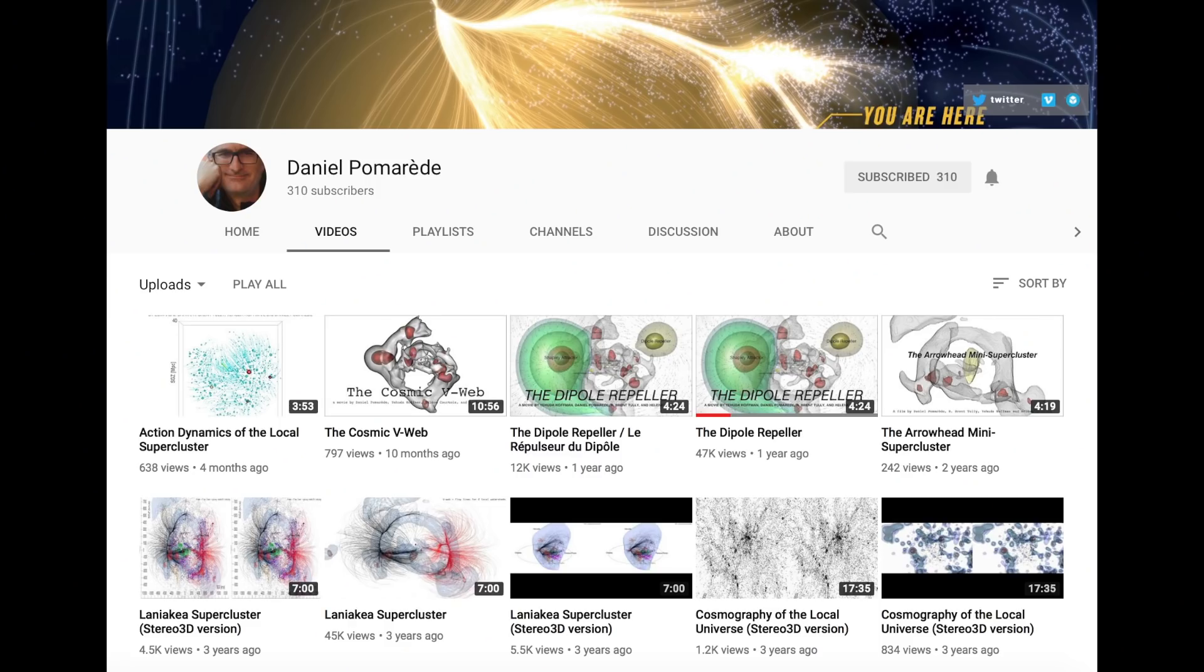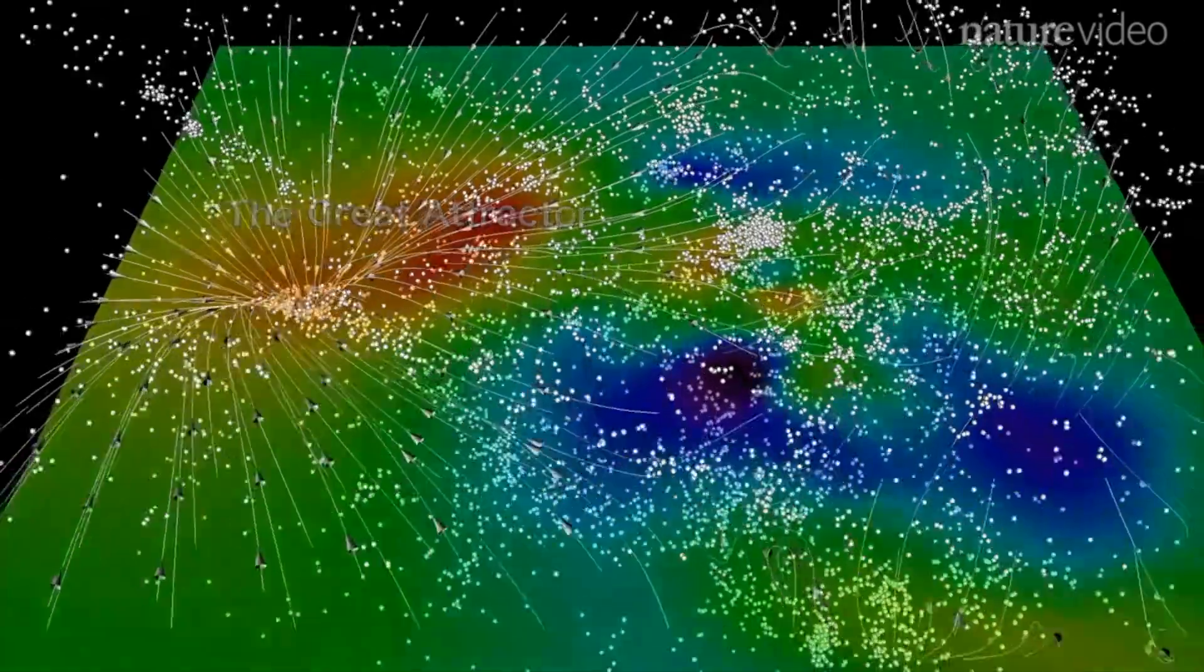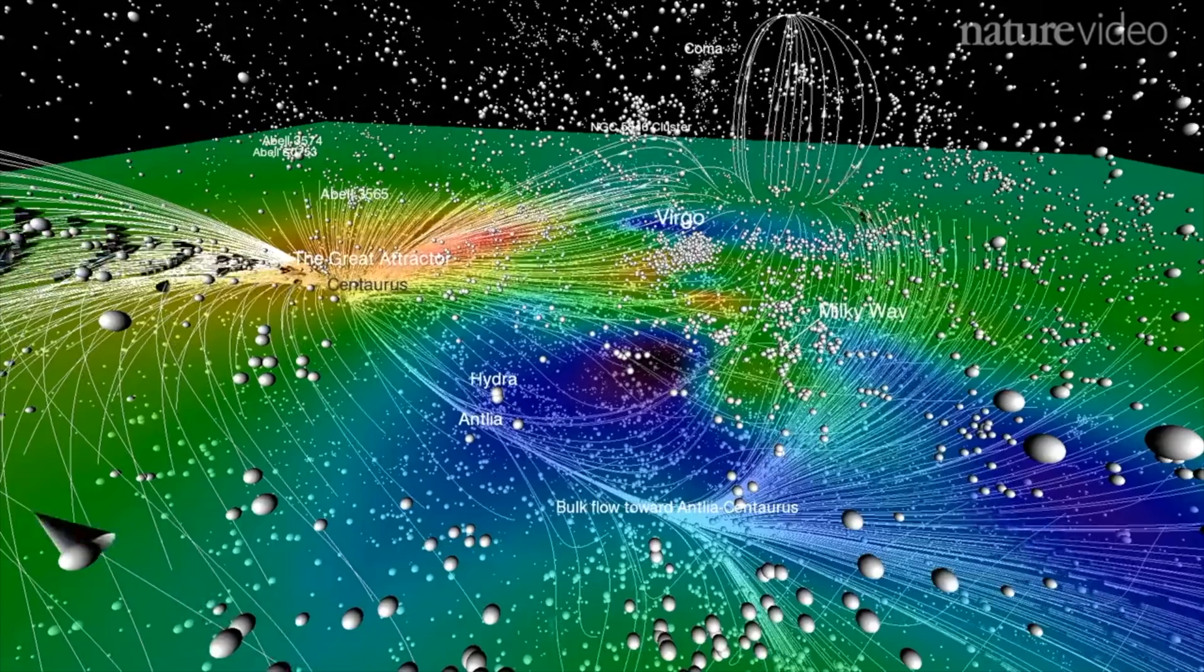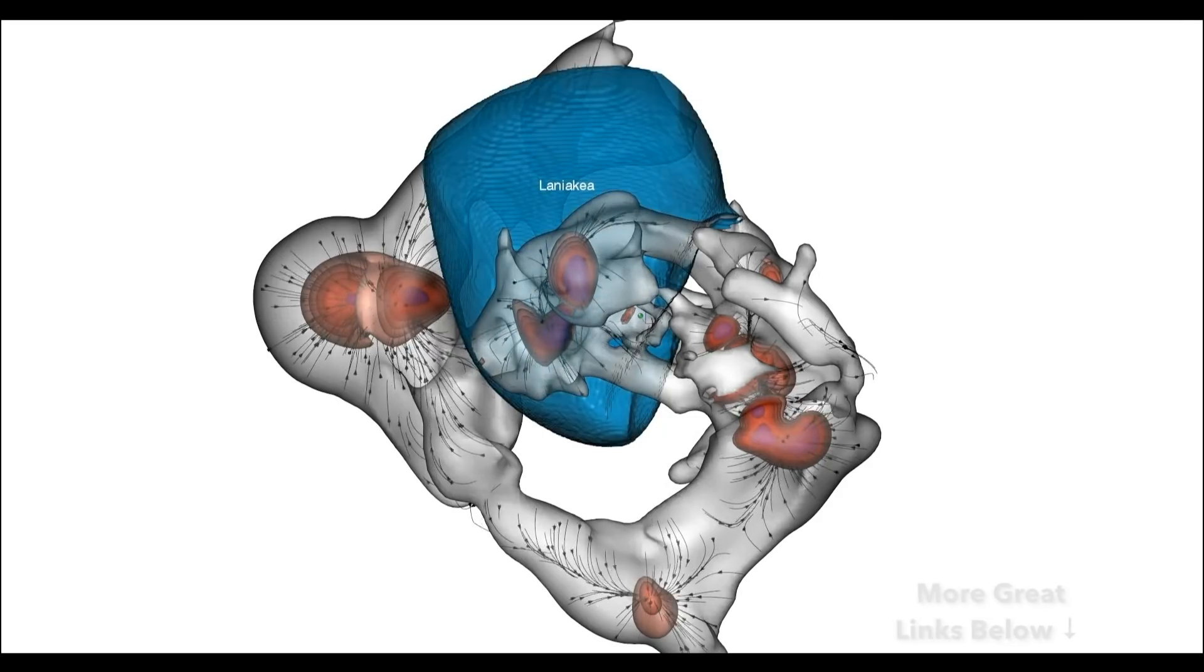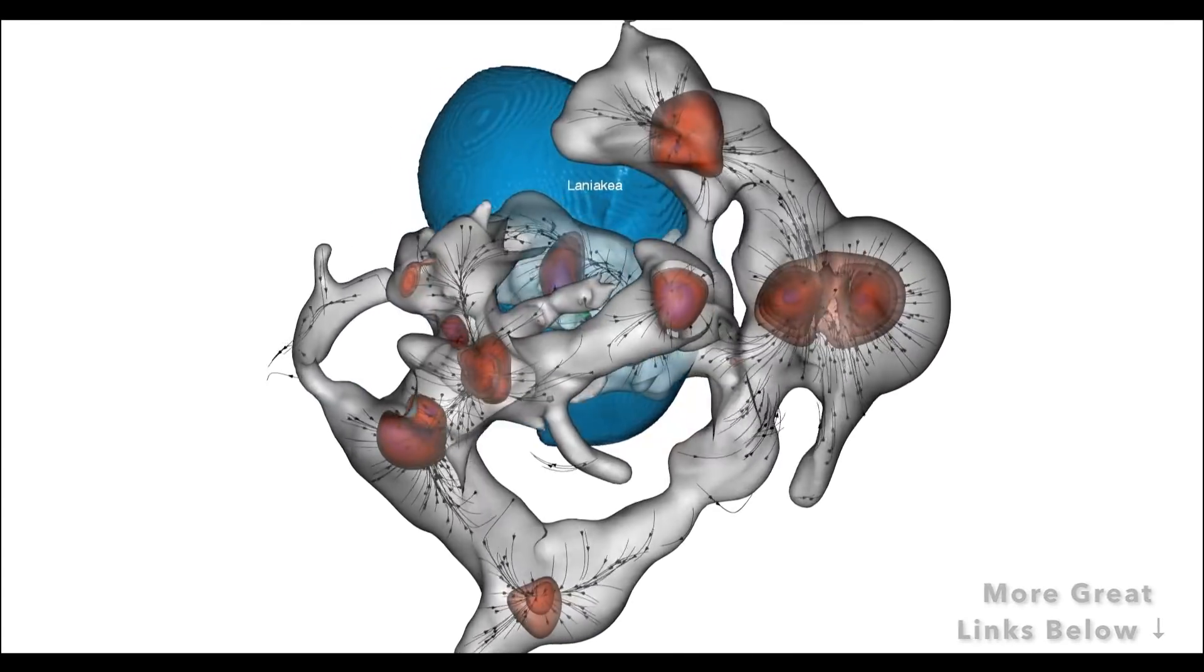This cosmic web video is by Daniel Pomerate and his co-authors. His YouTube channel has a ton of incredible visualizations based on their observations of the cosmos. For more on the cosmos, where we are and where we are going, as well as tons of other must-watch videos, check that list of links right below this one. Here we go, one more time.